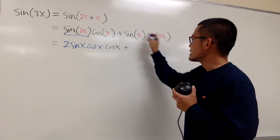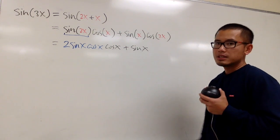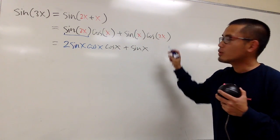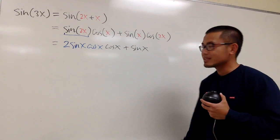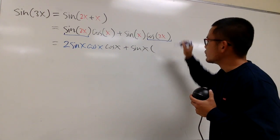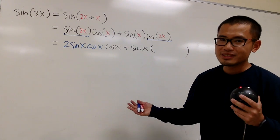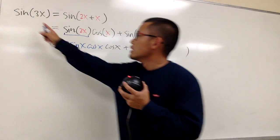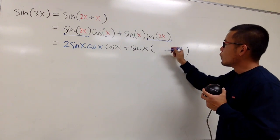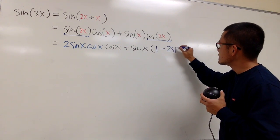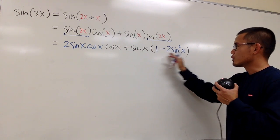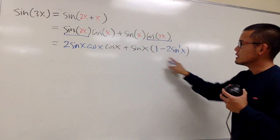Continuing, this is plus sine x — I cannot do anything with that so I keep it as is. But I see cosine of 2x, which is a double angle for cosine, and we have a formula for that. We have three versions for cosine of 2x. Keep in mind, our goal is to write sine of 3x in terms of sine of 1x only, so I will use 1 minus 2 sine squared x. I don't want to see any more cosine whenever possible.